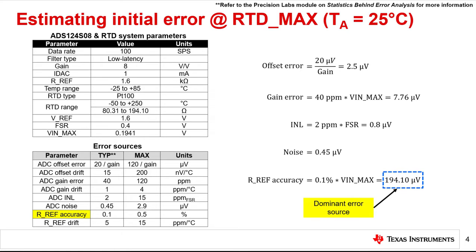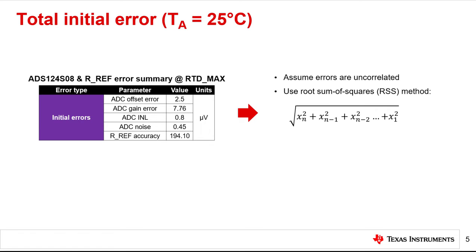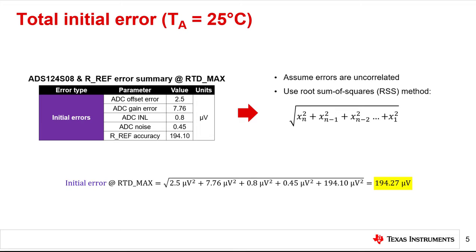Now let's discuss how to calculate total initial error. The table on the left summarizes the errors calculated in the previous slides. We assume the errors are uncorrelated, which allows us to use the root sum of squares method to calculate total error. The general form of this equation is shown on the right. We can use this formula to calculate a total initial error of 194.27 microvolts at the maximum RTD resistance. Typical errors are used in this example because this represents the most statistically likely set of conditions.